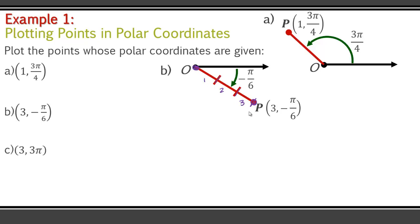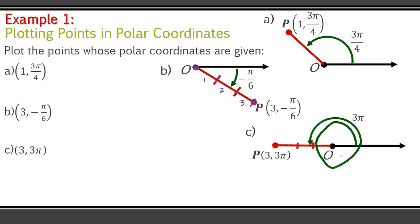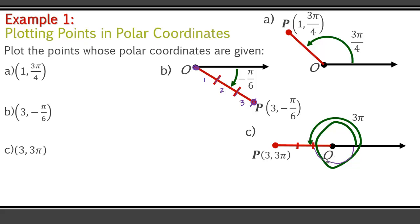Next we have (3, 3π). So we're starting from the polar axis and going: this is π, 2π, 3π. Always start from your polar axis, go around π, 2π, 3π. That brings us basically to making a larger ray, so to speak. And we've got 3 units — 1, 2, 3. Here are my 3 units. You don't have to number those; it's just so that you can see.